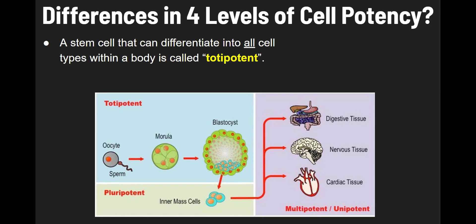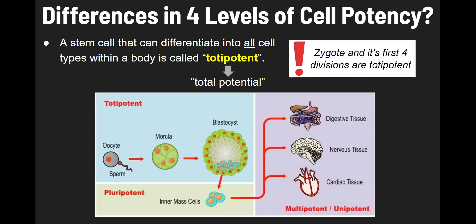A stem cell that can differentiate into all types of cells within a body is called a totipotent cell. It has the total potential to become any type of cell within the body. An example of a totipotent stem cell would be the zygote — the zygote and the first four divisions are all considered totipotent.